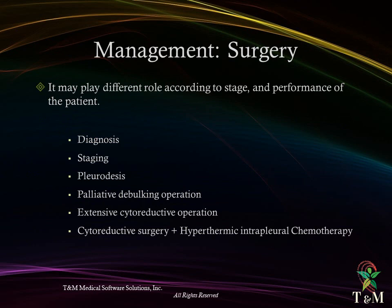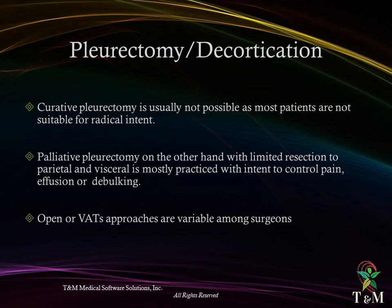Surgery may play different roles according to the stage and performance of the patient, and may include diagnosis, staging, pleurodesis, palliative debulking, or extensive cytoreductive surgery with or without hypothermic intrapleural chemotherapy. Pleurectomy/decortication: curative resection of the pleura is usually not possible, as most patients are not suitable for radical intent. Palliative pleurectomy with limited resection of parietal and visceral pleura is mostly practiced, with intent to control pain, effusion, or debulking, achievable through either open or video-assisted thoracoscopic approaches.